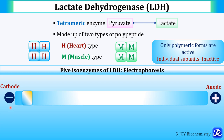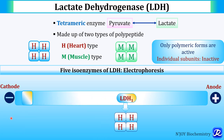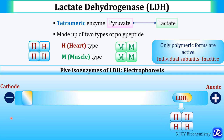Imagine a cathode on one side and an anode on the other, with the point of application where serum is applied. On the basis of serum electrophoresis, there are five isoenzymes. LDH1 has the fastest mobility towards the anode — it has four H-type subunits, so it is also called H4.